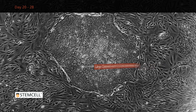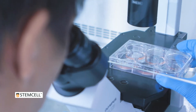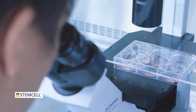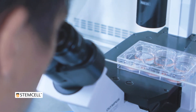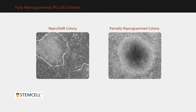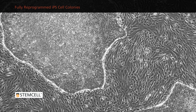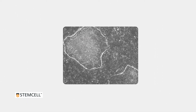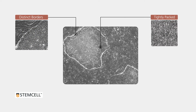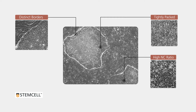In addition to fully reprogrammed IPS cell colonies, differentiated colonies and partially reprogrammed colonies may be present in your cultures. It is important to accurately distinguish between fully and partially reprogrammed IPS cell colonies to ensure successful selection and clonal expansion. Fully reprogrammed IPS cell colonies generated with ReproRNA and ReproTeaser will display the morphological characteristics of embryonic stem cell colonies — they should have distinct borders, cells should be tightly packed with prominent nucleoli, and have a high nuclear to cytoplasmic ratio.